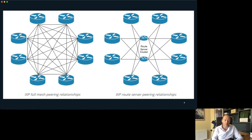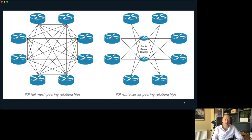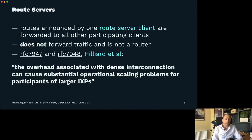This is just a graphical representation of what I was talking about. On the left we've got eight members, and the lines show how many bilateral BGP sessions would be required for a full mesh without route servers. On the right, with the route server cluster, each member only needs two sessions — one to each route server — so it's vastly simplified. Routes announced by one participant are forwarded to all other participating clients — that's what we mean by multilateral.